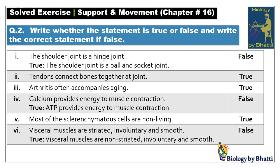Number five: most of the sclerenchyma cells are non-living — true, because their secondary cell wall causes them to become non-living. Number six: visceral muscles are striated, involuntary and smooth — this is false. Visceral muscles are another name for smooth muscles, which are non-striated. The correction is: replace 'striated' with 'non-striated.'